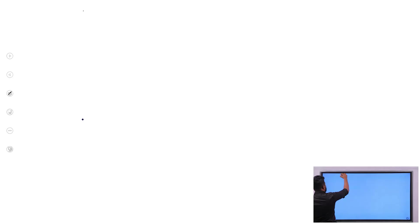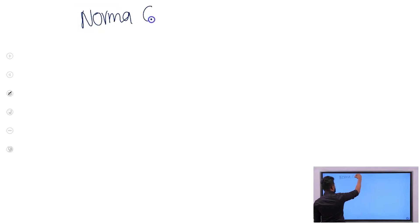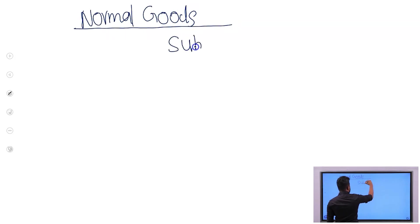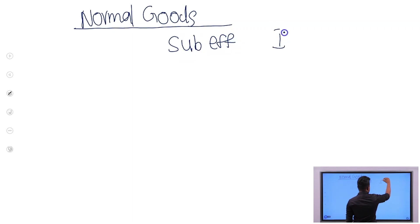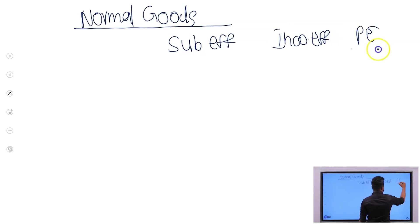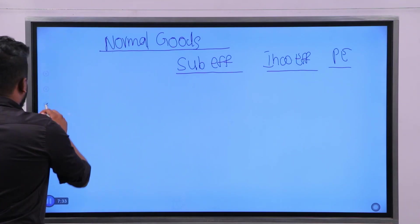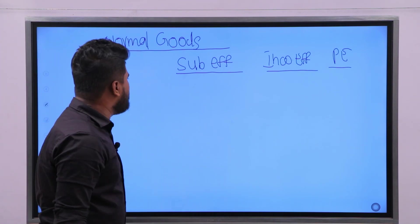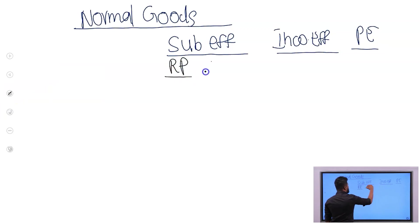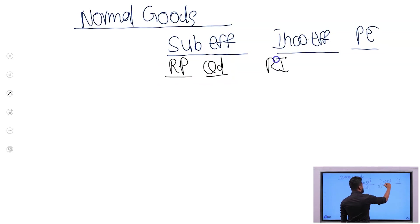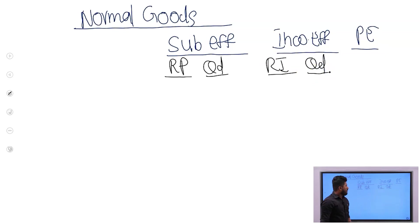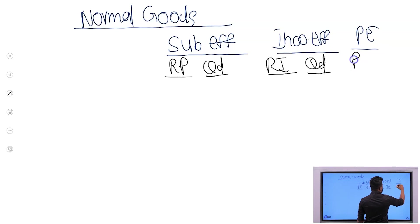Now I am going to talk about the substitute effect, income effect, and price effect of normal goods. When analyzing the substitute effect, we look at the relative price and quantity demanded. When analyzing the income effect, we look at real income and quantity demanded. When analyzing the price effect, we look at price and quantity demanded.